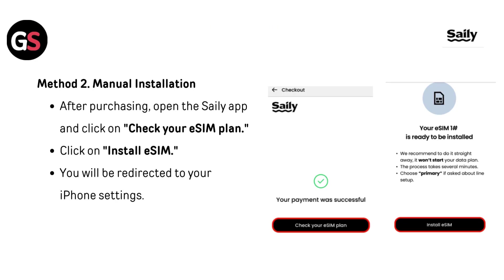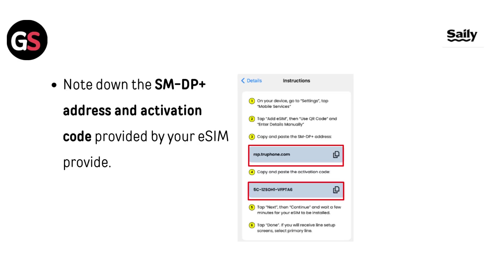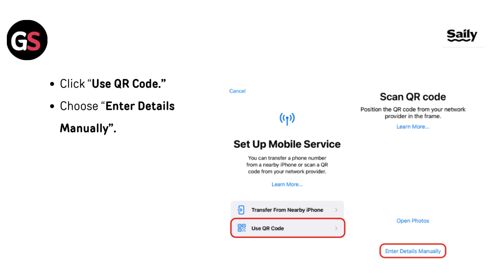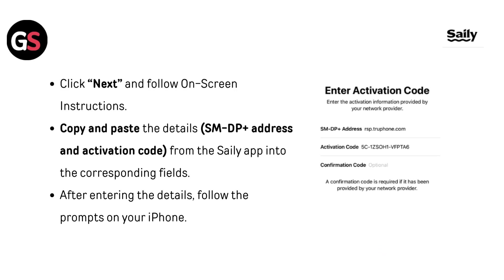iOS Method 2: Manual Installation. After purchasing, open the Selly app, click on Check Your eSIM Plan, then click Install eSIM. You will be redirected to your iPhone settings. Note down the SM-DP+ address and activation code provided by your eSIM provider. On your iOS device, open Settings and go to Mobile Data or Cellular depending on your iPhone model. Tap Add eSIM, click Use QR Code, then choose Enter Details Manually. Click Next and follow the on-screen instructions. Copy and paste the SM-DP+ address and activation code from the Selly app into the corresponding fields. After entering the details, follow the prompts on your iPhone.